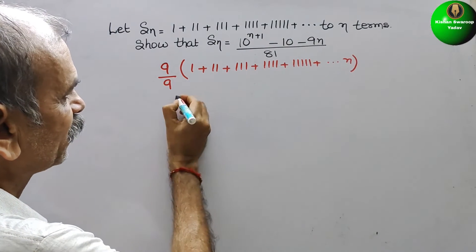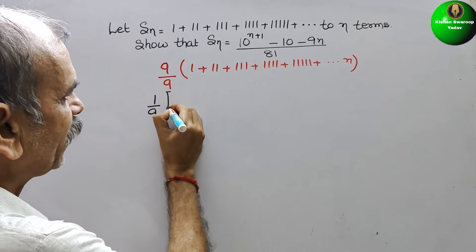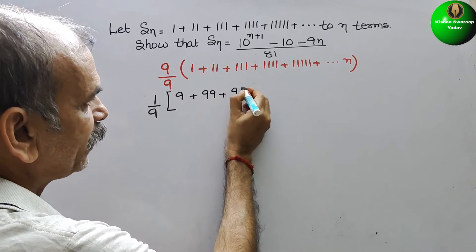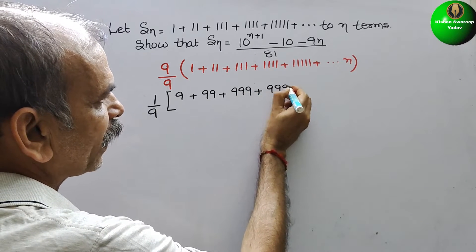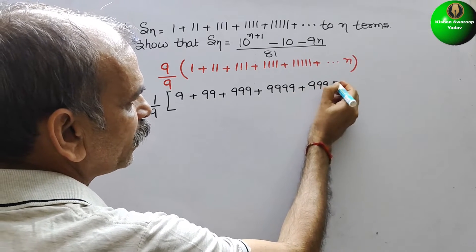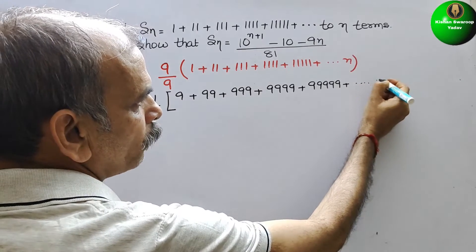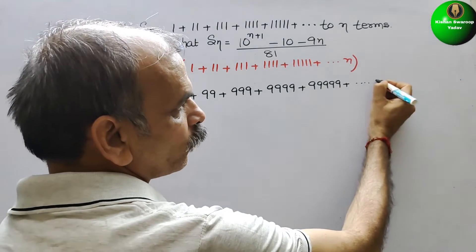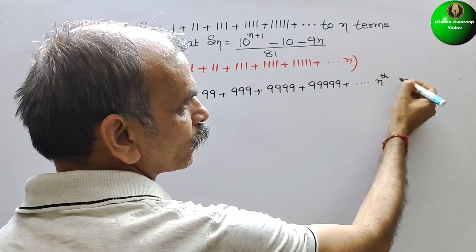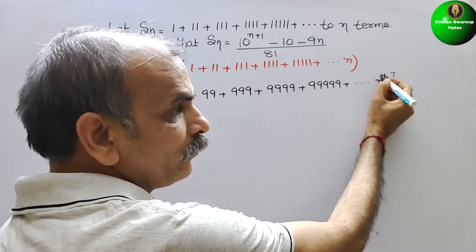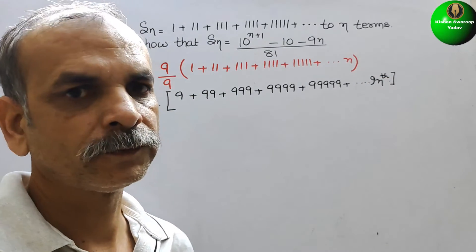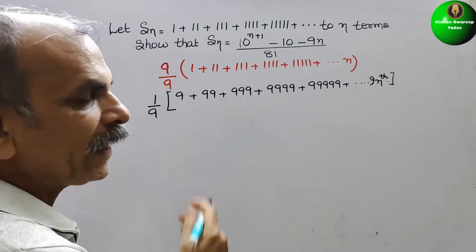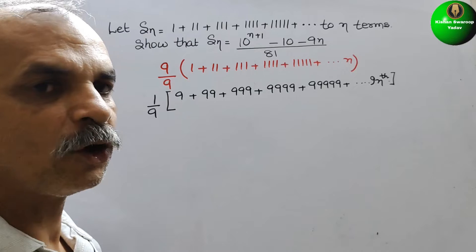After multiplying, we get (1/9) times the sum of 9 plus 99 plus 999 plus 9999 and so on up to n terms. Now notice that 9 is nothing but 10 minus 1, and 99 is nothing but 100 minus 1, and so on.